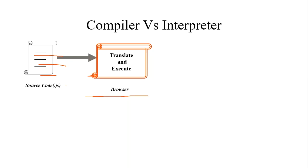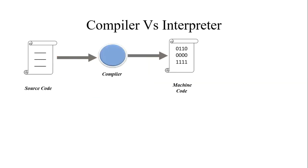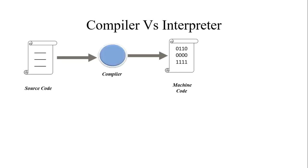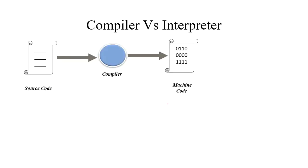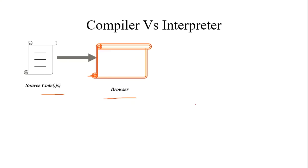It means, whenever I want to run a .js file, I need a browser. While running browser, it will translate and execute the specific source code. So, try to understand what is the basic difference between compilation and interpretation. In compilation, a separate machine code will be generated. In interpretation, no separate machine code will be generated.